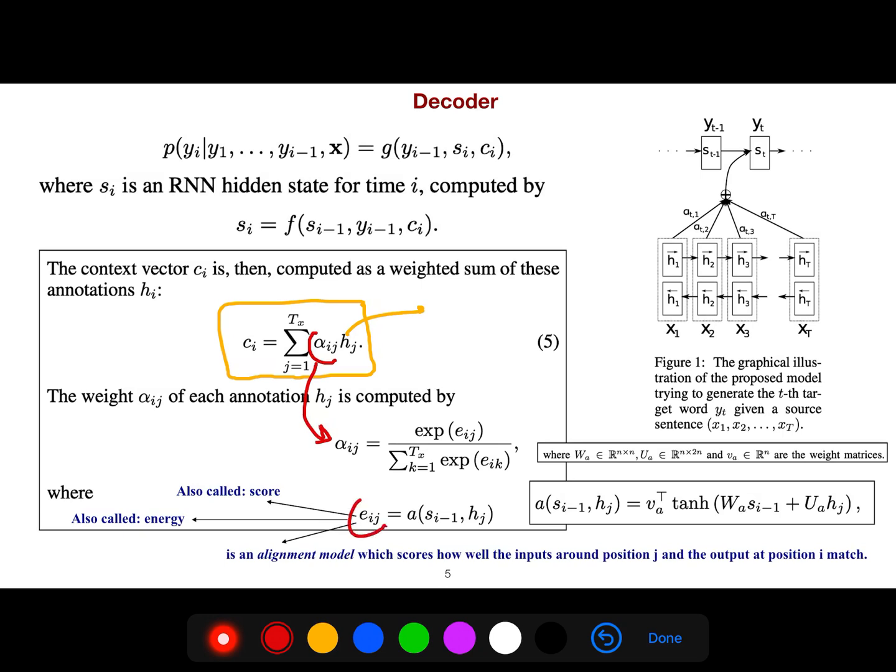But eij is sometimes called score, sometimes called energy, sometimes called alignment model. All of them are equal. What is important is that you can define this energy different ways. For example, one way is just to combine information from hidden states of encoder and hidden states of the decoder in the previous step.